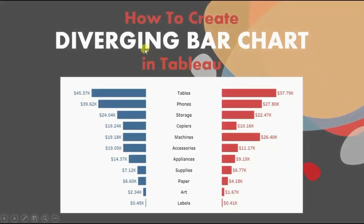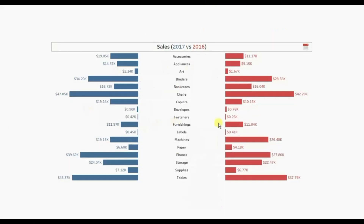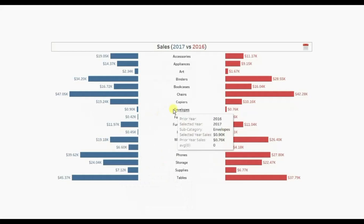In today's session we will see how to create a diverging bar chart in Tableau. This type of chart is also known as a butterfly chart. Let me first show you the demo of what we will be doing today. Here I have created a diverging bar chart that is comparing sales done in the year selected by the user with the previous year. Currently this chart is comparing sales done in the year 2017 with the sales done in the previous year, which is 2016.